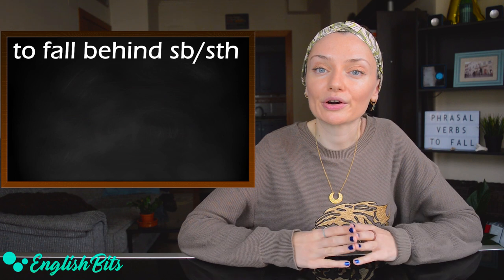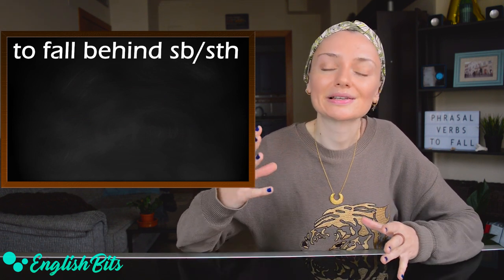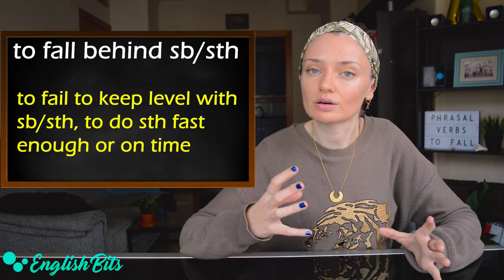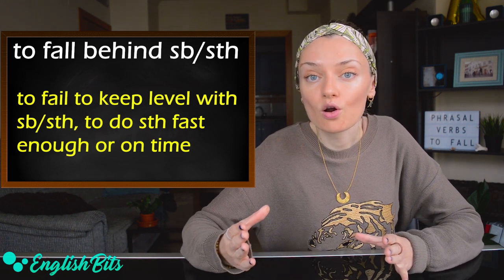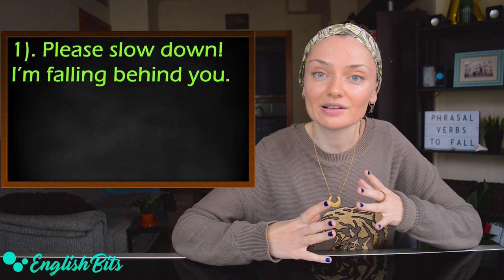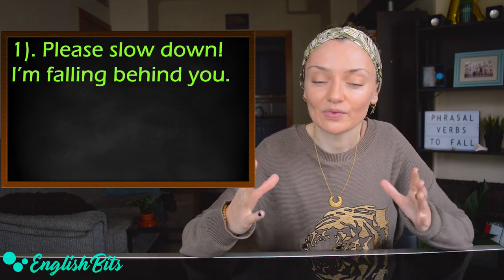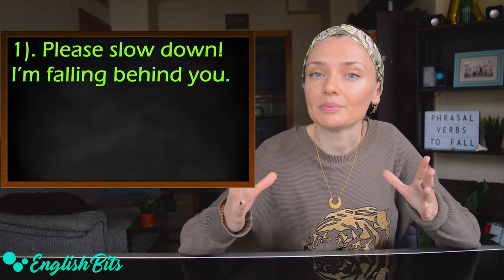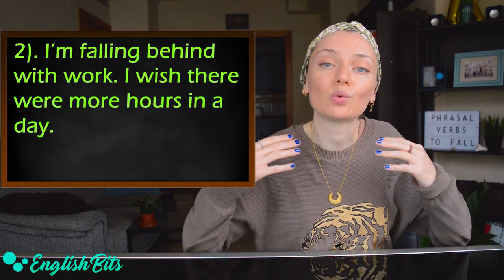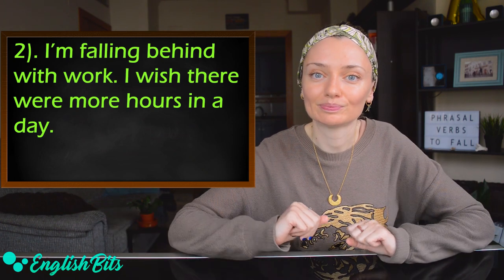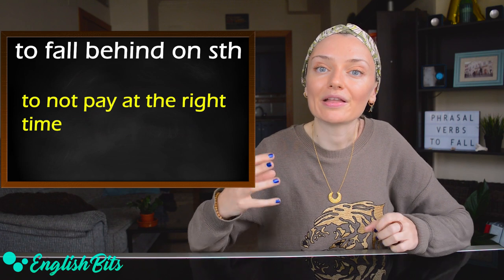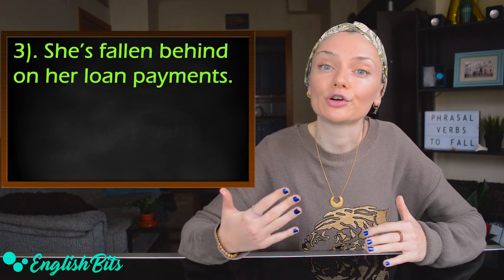Let's continue. Our third phrasal verb is to fall behind someone or something. It means to fail to keep level with someone or something, to do something fast enough or on time. For example, imagine you're running with a friend and he starts running too fast. You can say, please slow down, I'm falling behind you. And one more example: I'm falling behind with work, I wish there were more hours in a day. True story. We also use the preposition on — to fall behind on something — when we don't pay at the right time. For example, she's falling behind on her loan payments.